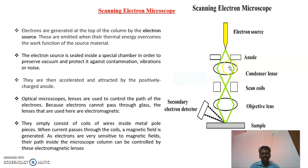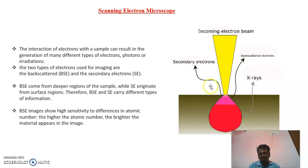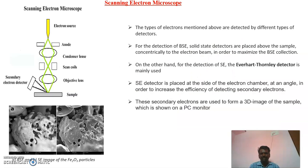After focusing, the electron beam strikes the sample. After striking, two different kinds of electrons are scattered: one is backscattered electrons, and another is secondary electrons. These backscattered electrons originate from the depth of the sample, and the secondary electrons originate from the surface of the sample. Both types are detected by their respective detectors.